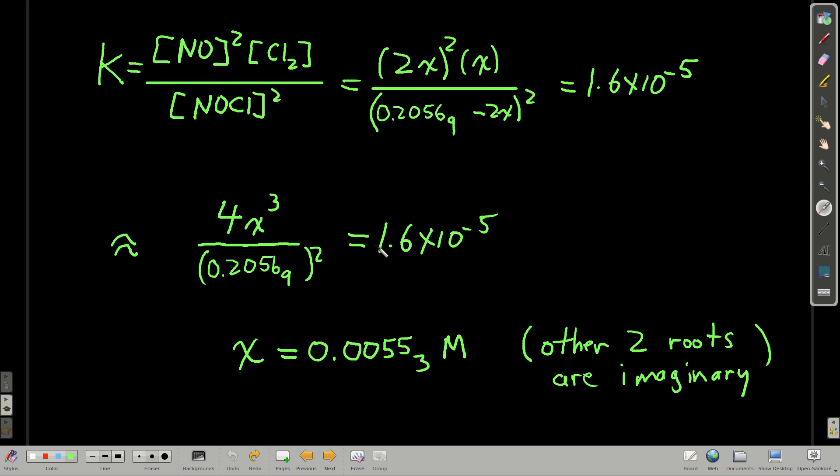Now this we can solve. We just multiply through by 0.2057 squared, divide by 4, and take the cube root. If you do that, check my work, make sure you get the same answer. Get x is about 0.0055 or so. There's two other roots because it's a cubic, but they're both imaginary. So we don't take imaginary roots. We don't use those. They don't make sense.